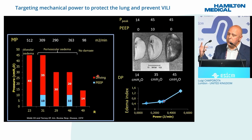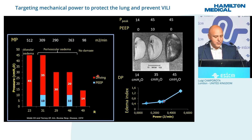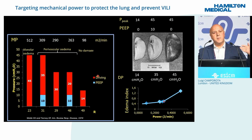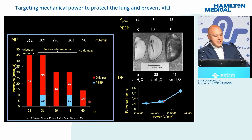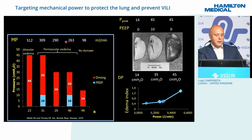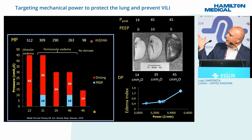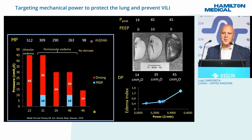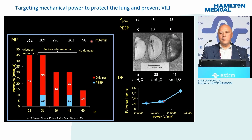A classic example from the 1970s shows animals ventilated with various levels of inspiratory pressure without PEEP, with PEEP, or with low driving pressure. A driving pressure of 45 corresponds to really high mechanical power. As mechanical power goes down, you go from alveolar edema to just perivascular edema to no damage. There is an almost linear relationship between the level of energy transmitted to the lungs and the degree of lung damage.